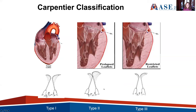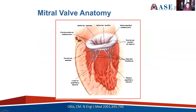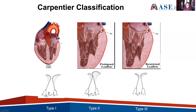A type 2 lesion is prolapse or myxomatous disease. This line represents the annulus and you see the billowing of the leaflets into the left atrium, which is typical of myxomatous disease. The third type is type 3, which is restricted leaflets — with a 3A and a 3B. Type 3A is restriction of the posterior leaflet in systole and diastole. Type 3B is restriction only in systole. Functional or secondary mitral regurgitation fits into the type 3B category.